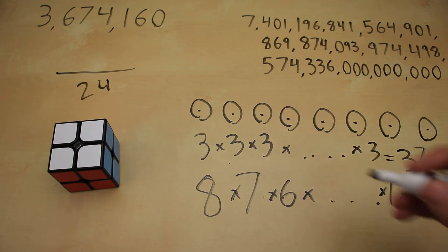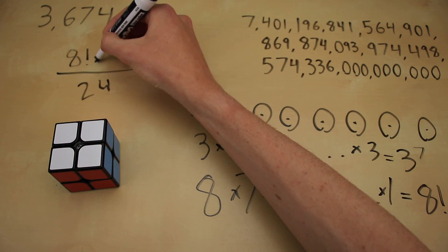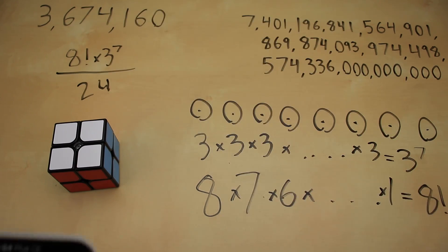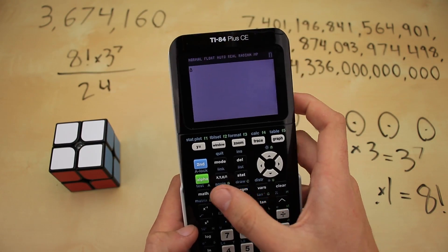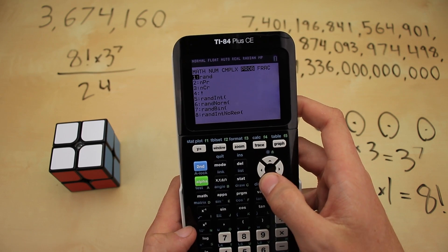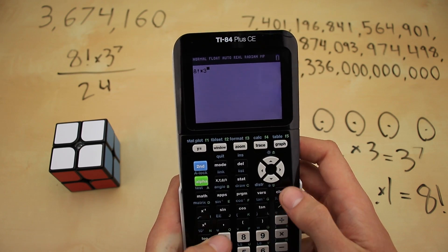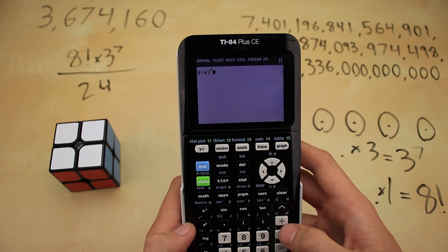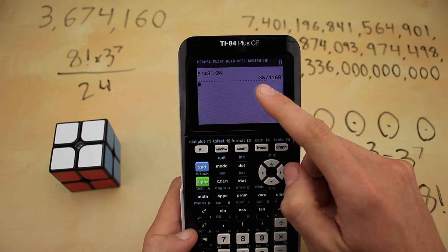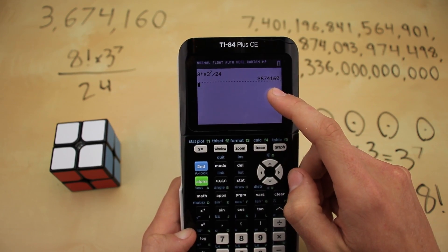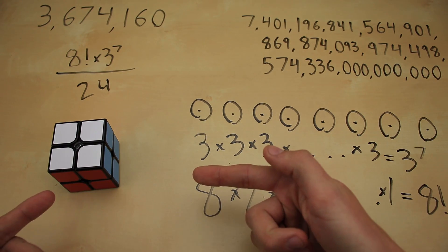Taking these two numbers and writing them into our expression, we now have the complete total number of possible positions on a 2x2 Rubik's Cube. We can check our work on a calculator: 8! times 3 to the 7th power, divided by 24, and we get 3,674,160 possible positions on a 2x2.